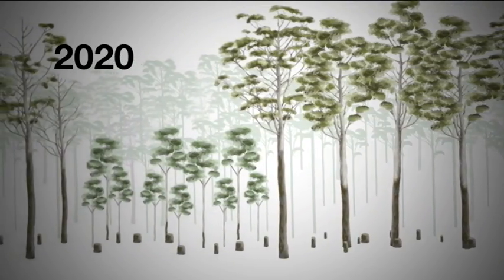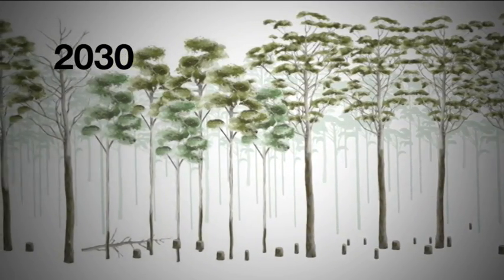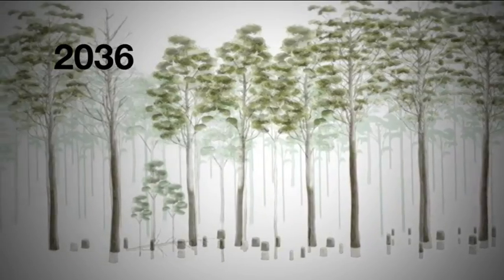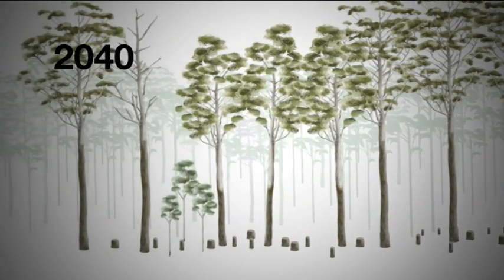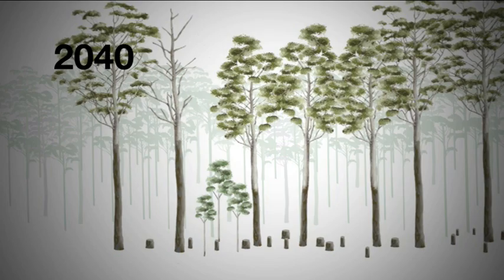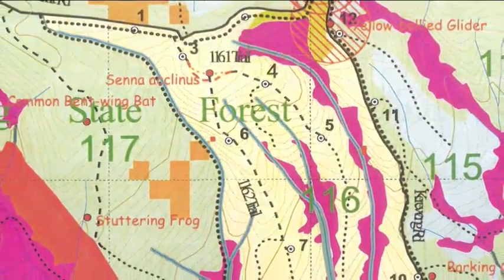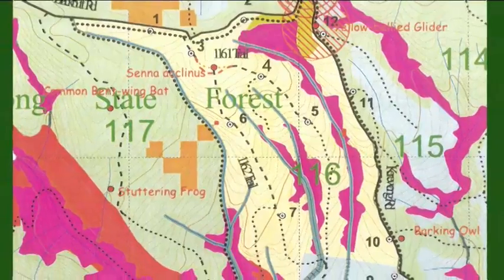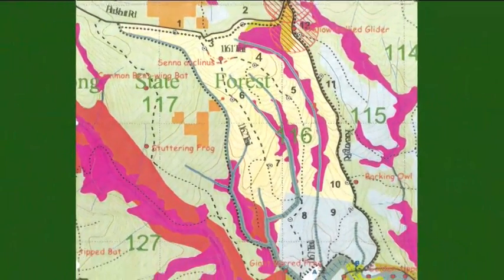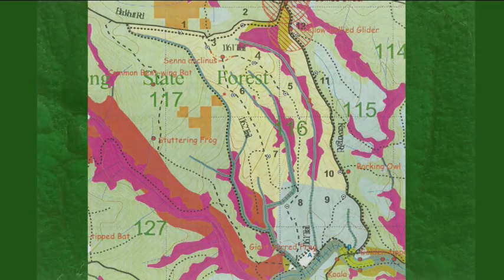The objective is to harvest high value saw log while retaining other groups, usually younger trees, as growing stock which will provide future saw log in 5 to 20 years time. Planning maps show the harvest areas along with protected areas and other information needed to ensure that the environment and people's safety are protected.